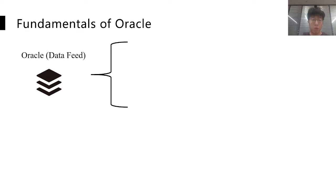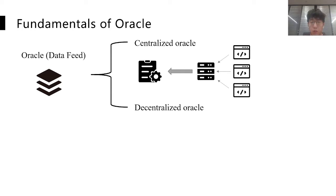Up to now, there have been many different Oracle protocols proposed. Generally speaking, all these protocols can be categorized into two different types: centralized Oracle and decentralized Oracle. For a centralized Oracle system, there will be several off-chain agents to collect information from different information sources, and then the information will be sent to Oracle's on-chain interface, which is a smart contract, and after that the information will be forwarded to other users who need it. Such a system could be simple and efficient, but it once again brings back the problem of single point failure. In order to deal with this, more and more people began to design decentralized Oracle.